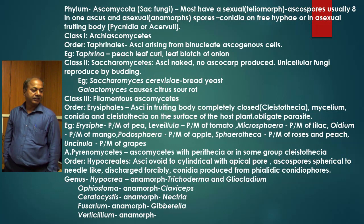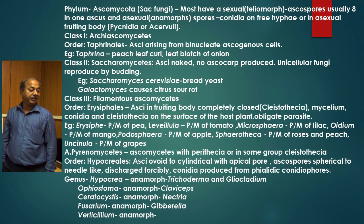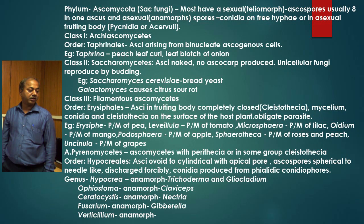The next class is Saccharomycetes, which also produces naked asci and no ascocarps. Unicellular fungi reproduced by budding — that is the characteristic feature of the class Saccharomycetes. Saccharomyces cerevisiae is the bread yeast, and Galactomyces causes citrus sour rot.